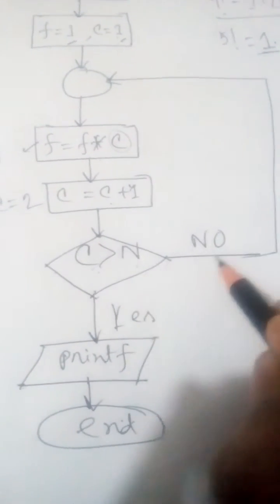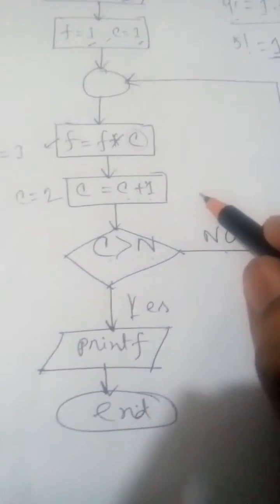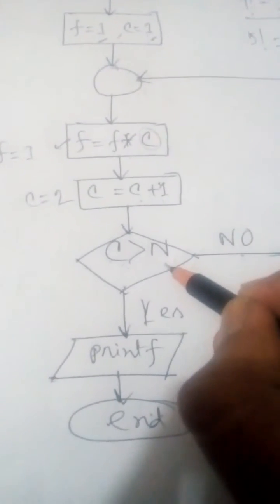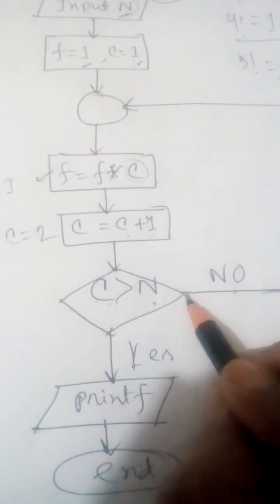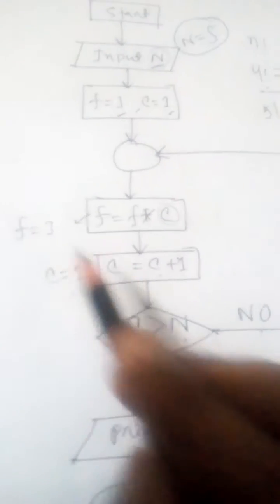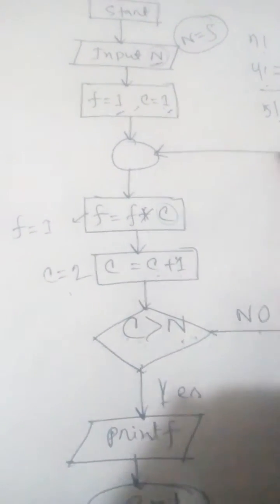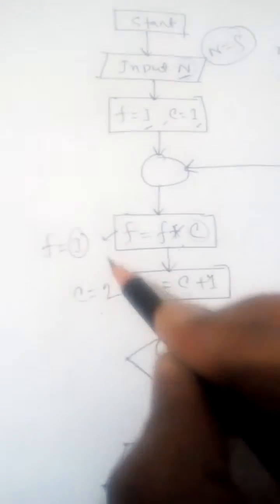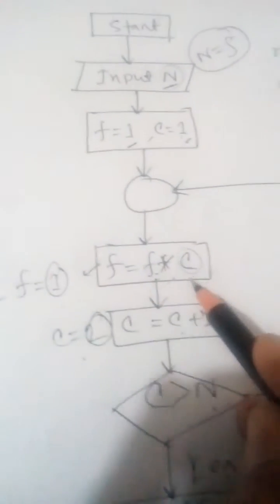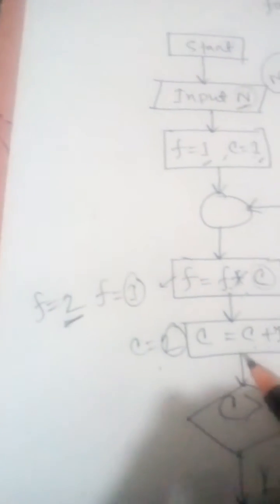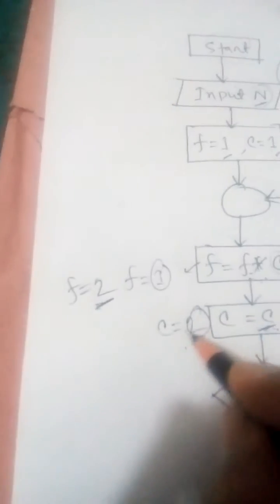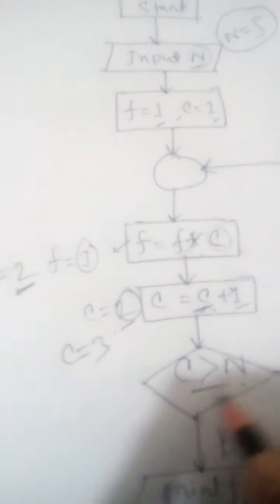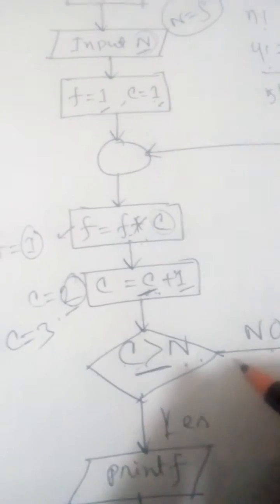Since c equals 2 and n equals 5, the condition is false, so the system repeats. Here c equals 2 and f equals 1, so we go back and compute f = f × c = 1 × 2 = 2. New f equals 2. Then c increments: c = 2 + 1 = 3. With c equals 3 and n equals 5, the condition is again false, so it repeats again.